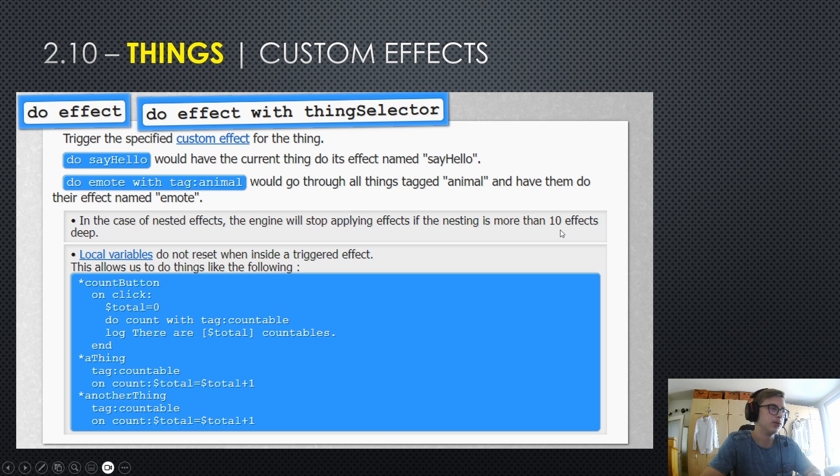And in the case of nested effects, the engine will stop applying effects if the nesting is more than 10 effects deep. Like I mentioned, there is a 10 nesting limit, basically. And also important to mention is that local variables do not reset when inside a triggered effect. And this allows us to do things like the following.